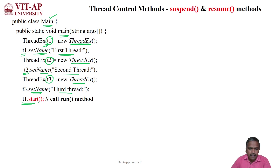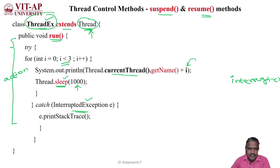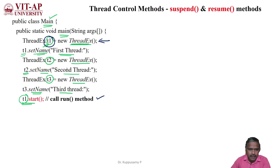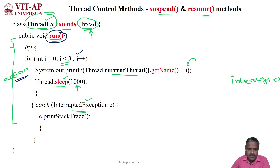Then I am starting the threads. When we call the start method, the run method is automatically called. Since t1 belongs to threadex, the run method available inside threadex will be invoked. This action will be performed three times. The currently running thread here is thread1 — you can see that t1 is set with the name 'first thread'.